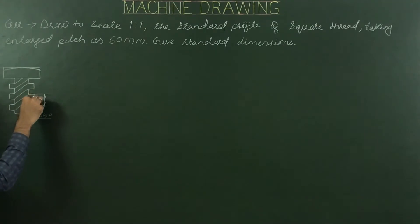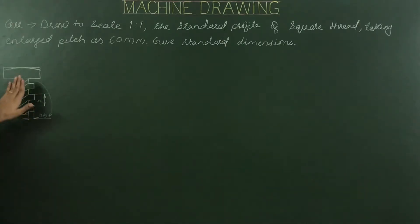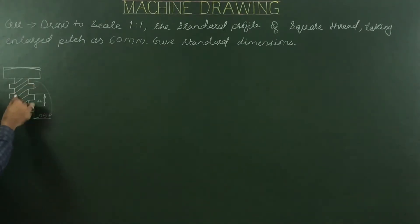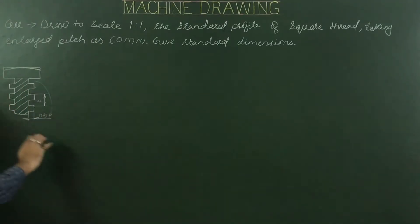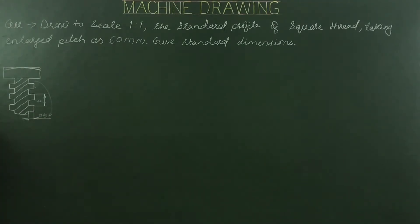The standard profile means we are required to show or construct the threaded part, focusing on the cross-sectional area of the given thread. The depth and distance between two threads equals half of pitch or 0.5p. Problem: draw to scale 1:1 (full size) the standard profile of a square thread, taking the large page as 60mm. Standard dimensions are given.